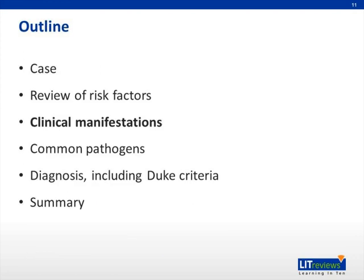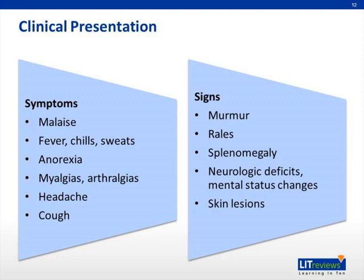Clinical manifestations. When a patient presents with endocarditis, there are often nonspecific complaints, but exam findings may be more characteristic for infective endocarditis. Symptoms may be worrisome, as in the case of acute infective endocarditis, in which the patient was septic with abnormal vital signs. However, patients may also present with subacute infective endocarditis, complaining of weeks of malaise, fever, anorexia, sweats, myalgias, arthralgias, headache, or cough.